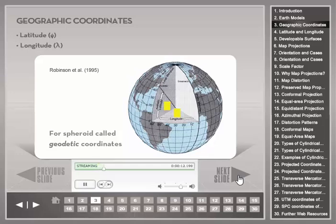Both are angular measurements. Latitude, usually denoted by the Greek letter phi, gives the location of a place on the Earth's surface north or south of the equator, ranging from 0 degrees at the equator to 90 degrees at the poles. Longitude, denoted by the Greek letter lambda, measures the angle east or west from the prime meridian that goes through Greenwich, England. Geographic coordinates based on a spheroid are known as geodetic coordinates; for this presentation, we will use the more generic term geographic coordinates.